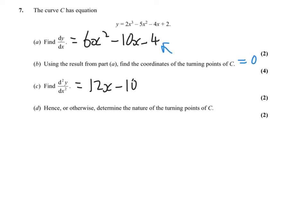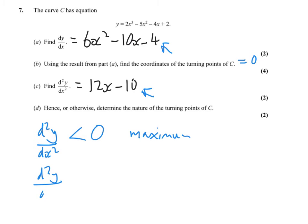Hence or otherwise, determine the nature of the turning points. All you've got to do is substitute the values you found in part B into your second derivative. Remember: if d²y/dx² is less than 0, it's a maximum; if it's greater than 0, you've got a minimum. Terrible writing — I can only apologise.